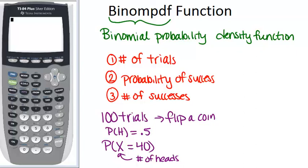So what we're going to do is go into the distribution menu, which you get to by pushing second and then variables. And you have to scroll down until you see this, Binompdf. There we go. And then click enter.